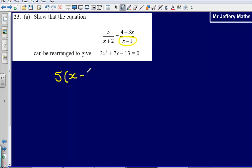So 5 times x minus 1 divided by x plus 2, and that is equal to 4 minus 3x. By multiplying by x minus 1, I have got rid of that as a fraction.